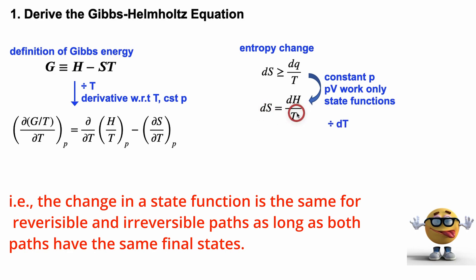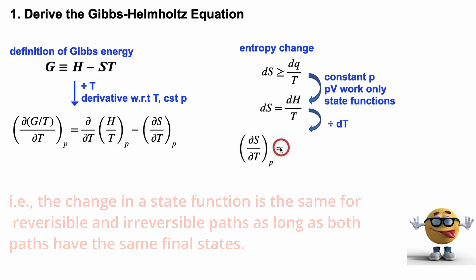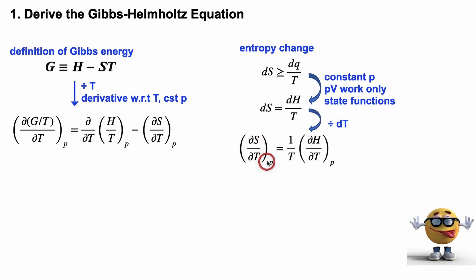Now from this equation, we're going to divide by dT. And if we do that, we're left with dS over dT. Again, pressure is constant. And see these two terms? These are exactly the same. So we're going to substitute into this.